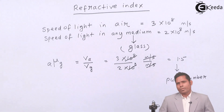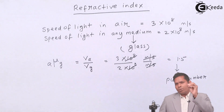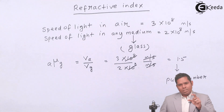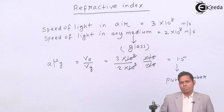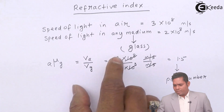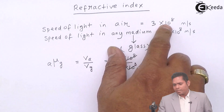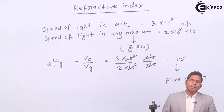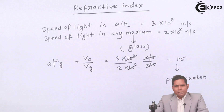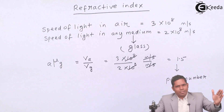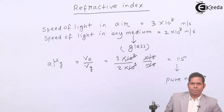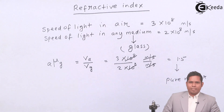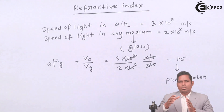So the absolute refractive index of glass is 1.5. That means the speed of light in air is 1.5 times greater than the speed of light in that medium. If the refractive index is 2, it means the speed of light in air is twice the speed of light in the given medium.